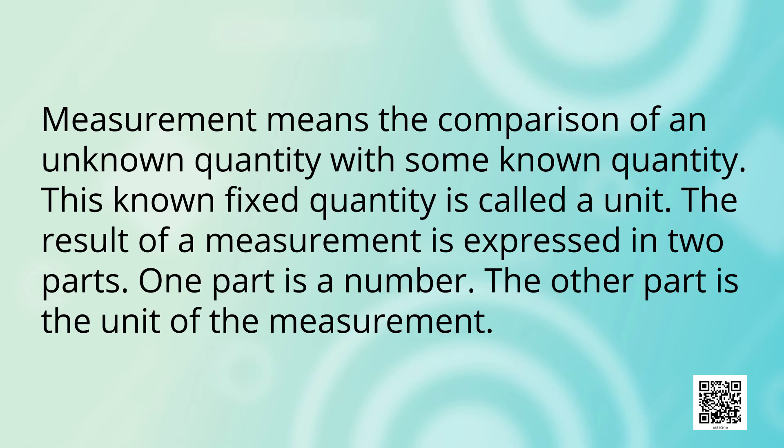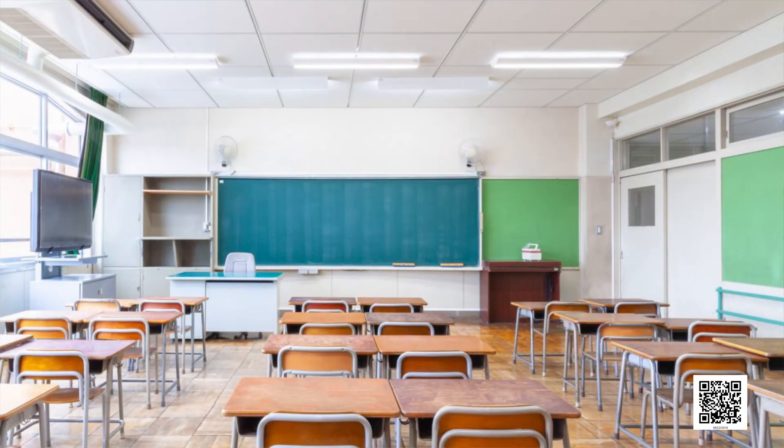We see that measurement means the comparison of an unknown quantity with some known quantity. This known fixed quantity is called a unit. The result of a measurement is expressed in two parts. One part is a number. The other part is the unit of the measurement. For example, if the length of this room is found to be 4 meter, then 4 is the number and meter is the unit selected for the measurement.